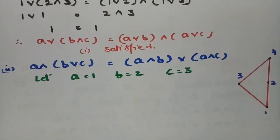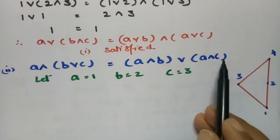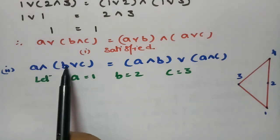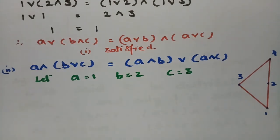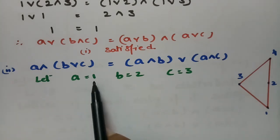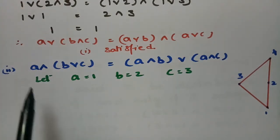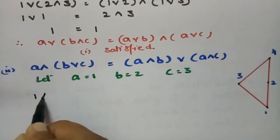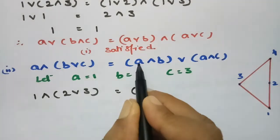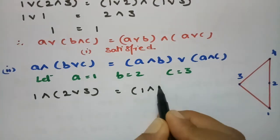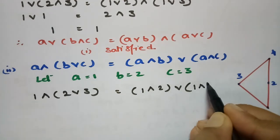Now for the second property: A meet (B join C) = (A meet B) join (A meet C). We select the same elements A = 1, B = 2, C = 3. Substituting into the LHS: 1 meet (2 join 3). On the RHS: (1 meet 2) join (1 meet 3).